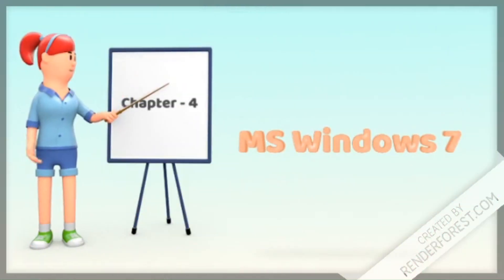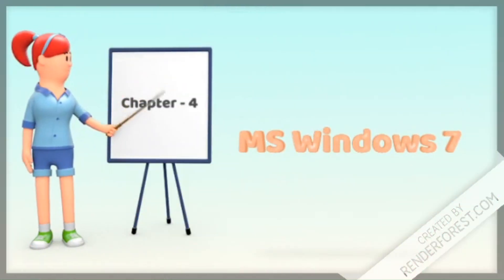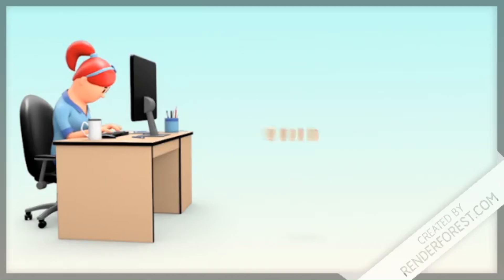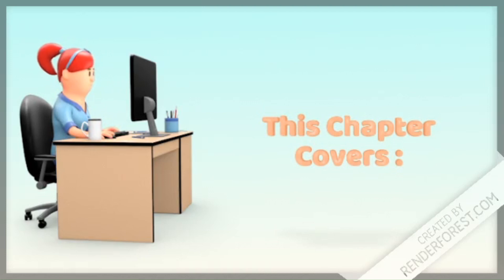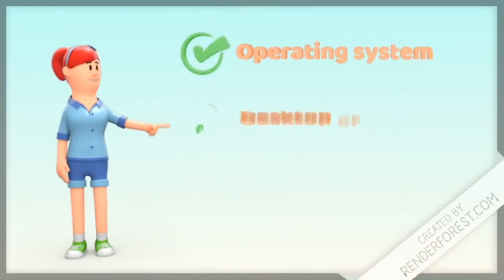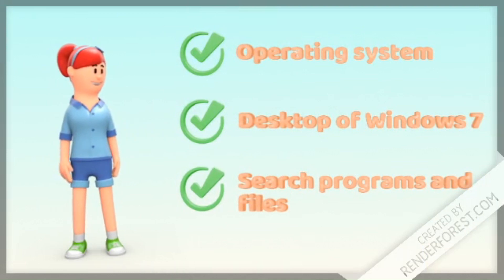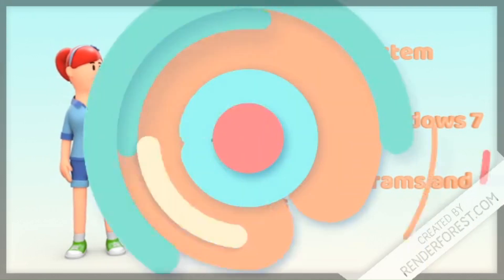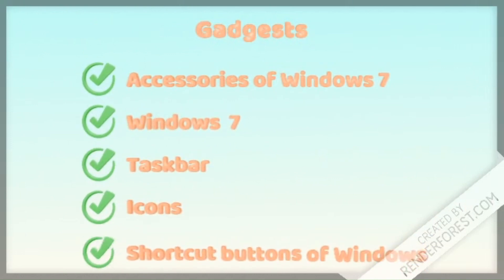Chapter 4: MS Windows 7. This chapter covers the Operating System Desktop of Windows, Search Programs and Files, Gadgets, Accessories of Windows 7, Open Windows 7 Taskbar, icons, and shortcut buttons of Windows.